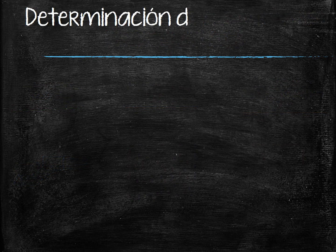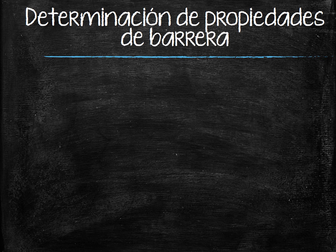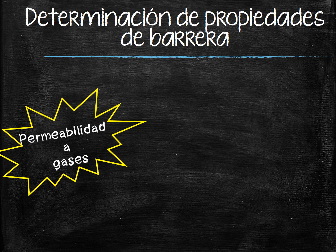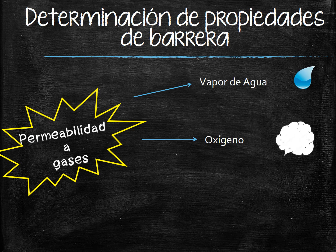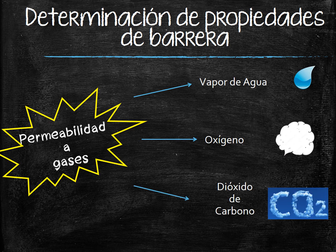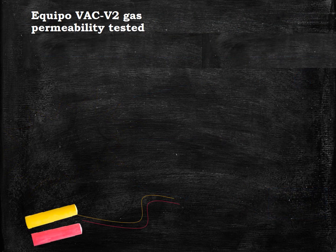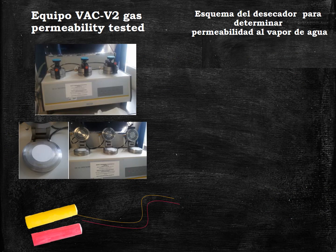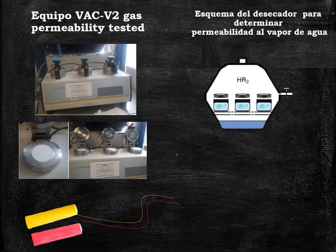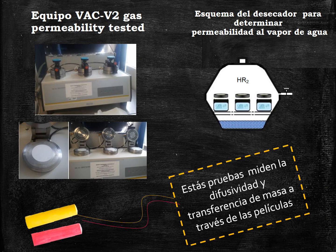To determine barrier properties, we must measure the permeability to different gases such as water vapor, oxygen, and carbon dioxide. These tests measure diffusivity and mass transference in films.